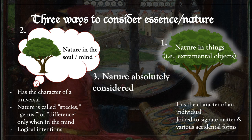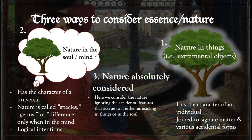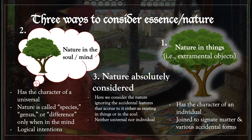The third way of considering a nature is absolutely. St. Thomas refers to this as the nature absolutely considered. Here, we consider the nature ignoring the accidental features that accrue to that nature, either as existing in things or as existing in the soul or mind. In this way, a nature is neither universal nor individual, neither one nor many. That's because the only things that can be predicated of it are the things that belong to the nature absolutely considered, or that belong to the nature per se. For instance, we can say of the nature human, absolutely considered, that it is rational and animal. We cannot say that the nature human is an individual or a universal when we're considering that nature absolutely.